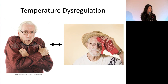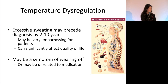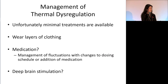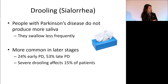Temperature dysregulation is something my patients complain of — feeling hot one minute and very cold the next, with sweating in public that is very uncomfortable. Excessive sweating can actually precede a Parkinson's diagnosis by two to ten years and can be a symptom of wearing off, so pay attention to whether it's related to when your medications are due. Treatments are limited. I counsel patients to wear layers of clothing. Adjusting medication schedules helps if it's related to fluctuations. Interestingly, deep brain stimulation for Parkinson's may actually help with excessive sweating, though that's not a reason to pursue the procedure on its own.